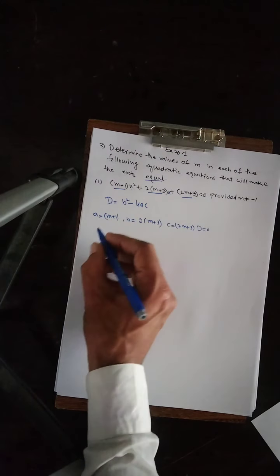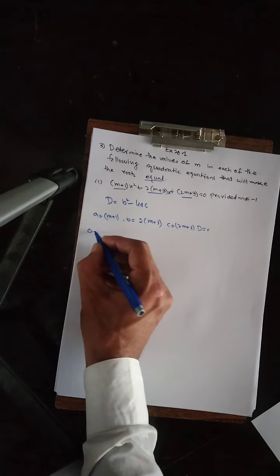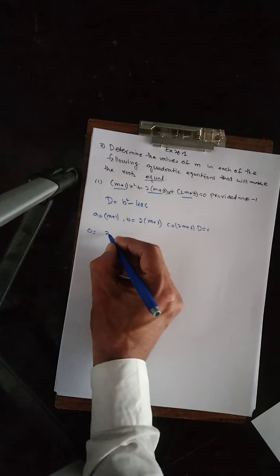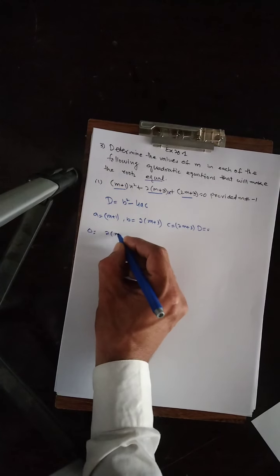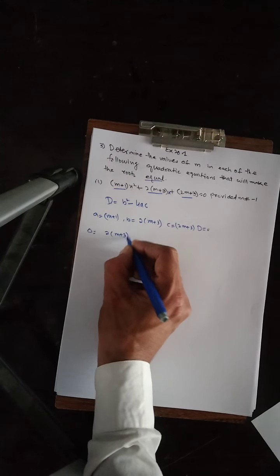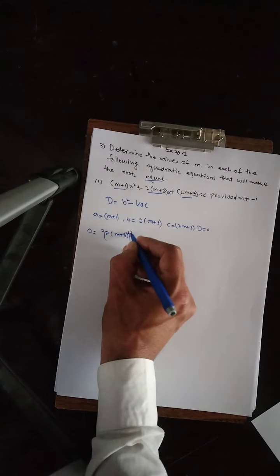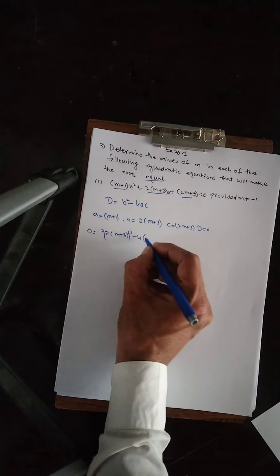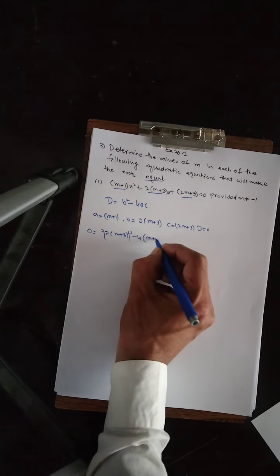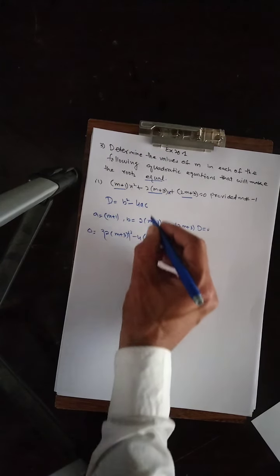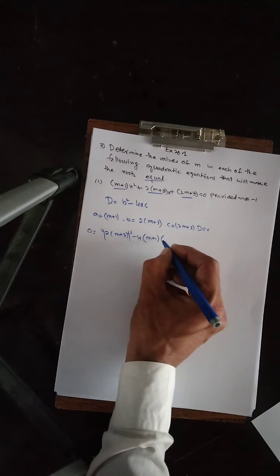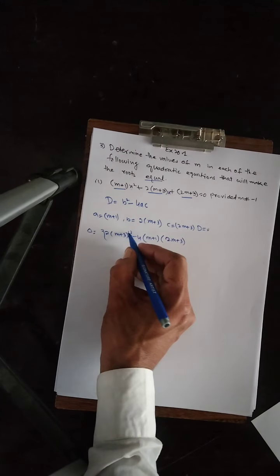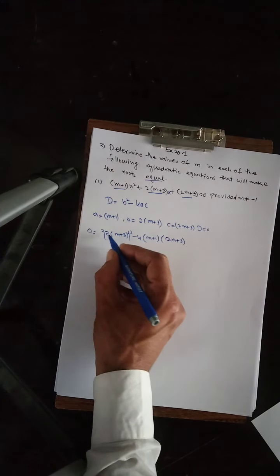So D equals 0. B is equal to 2m plus 3, whole square. The formula has A equal to m plus 1 and C equal to 2m plus 3.